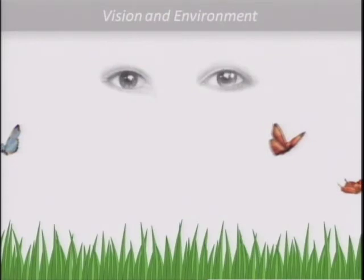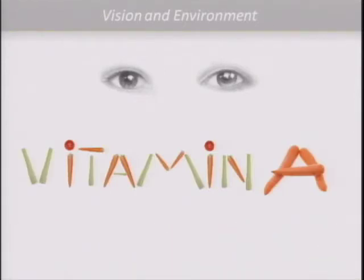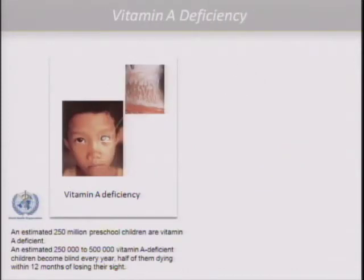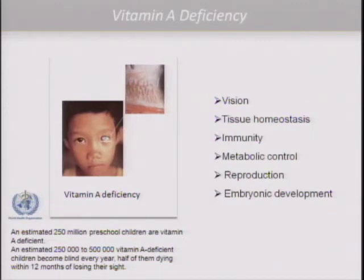The eyes acquire more than 80% of our sensory input for the brain, and additionally, the eyes are strictly dependent on a dietary nutrient which we all know as vitamin A. Vitamin A deficiency is still a major leading cause for blindness worldwide. According to the World Health Organization, approximately 250 million preschool children are suffering from vitamin A deficiency, and 250,000 to 500,000 die each year because of it. Vitamin A is not only required for vision, but also for tissue homeostasis, immunity, metabolic control, reproduction, and embryonic development. Most of these children who are clinically vitamin A deficient and go blind die from infectious diseases such as measles.